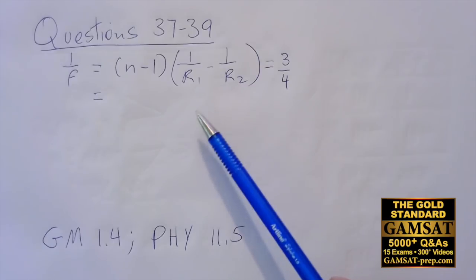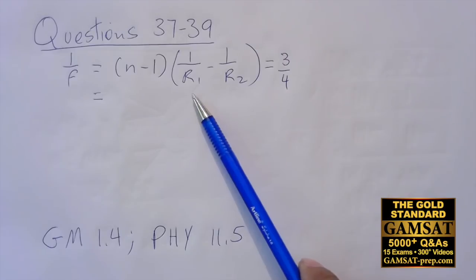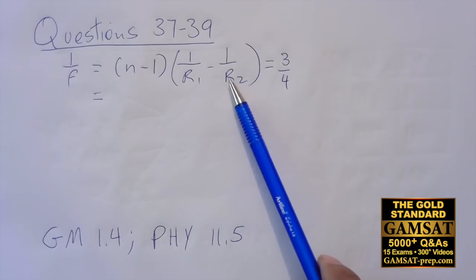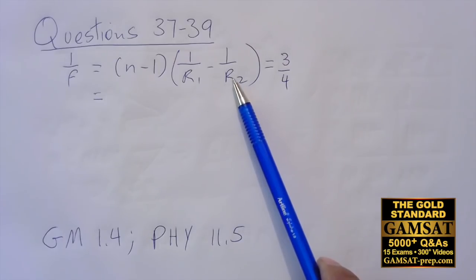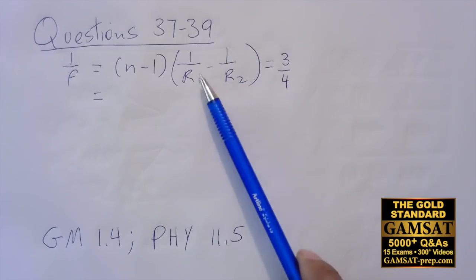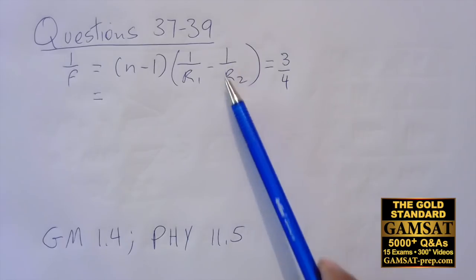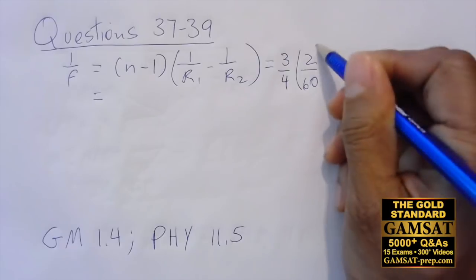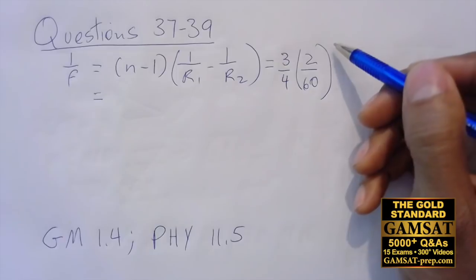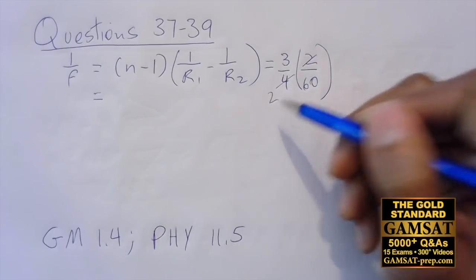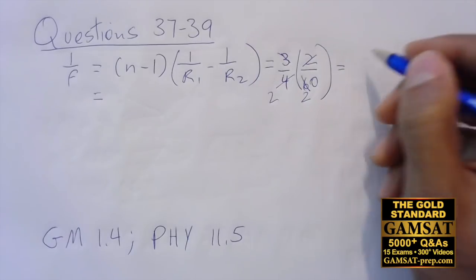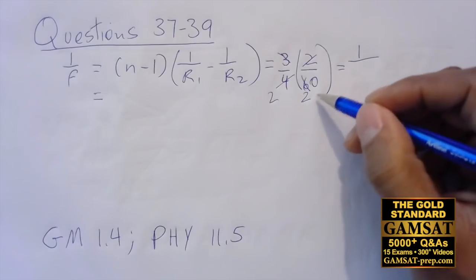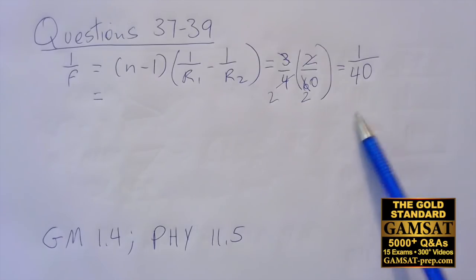Then it's 1 over 60, that's r1 and r1 is positive. Minus, and then r2 has to be negative according to the table for a convex surface. So I have 1 over 60 again but it's negative. In other words we have 1 over 60 minus minus 1 over 60, and negative of negative is positive, so we have 1 over 60 plus 1 over 60. That's just 2 over 60. I also see that 2 goes into 4 twice, 6 goes into 3 twice, so I have 1 in the numerator left and I have 2 times 20 which is 40 in the denominator.